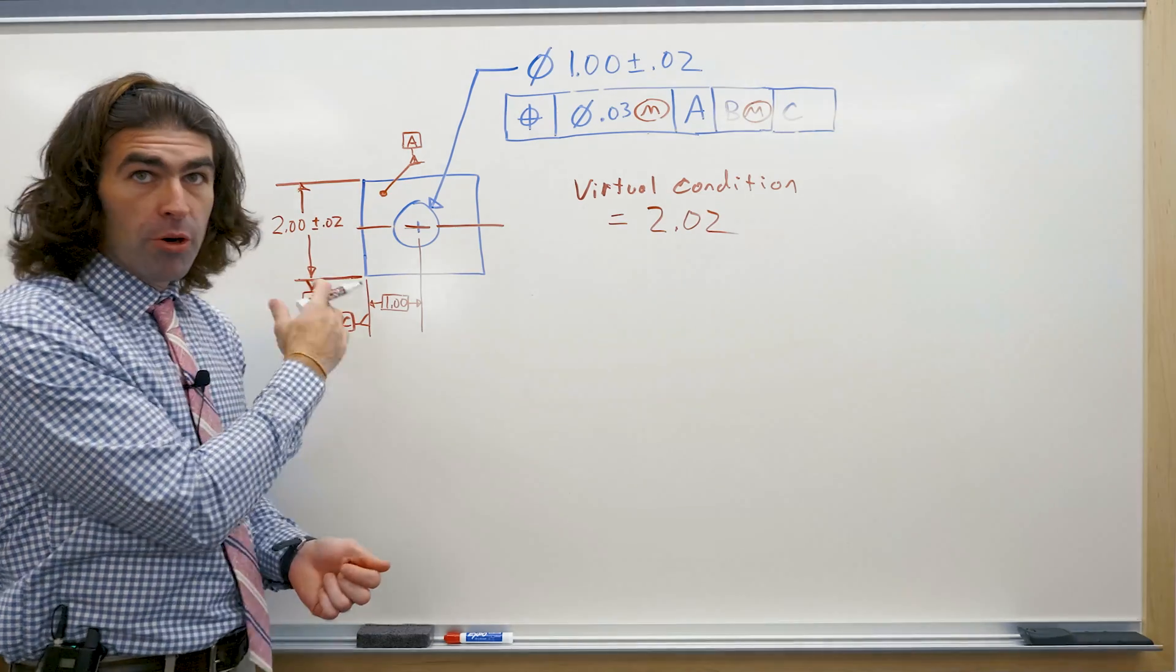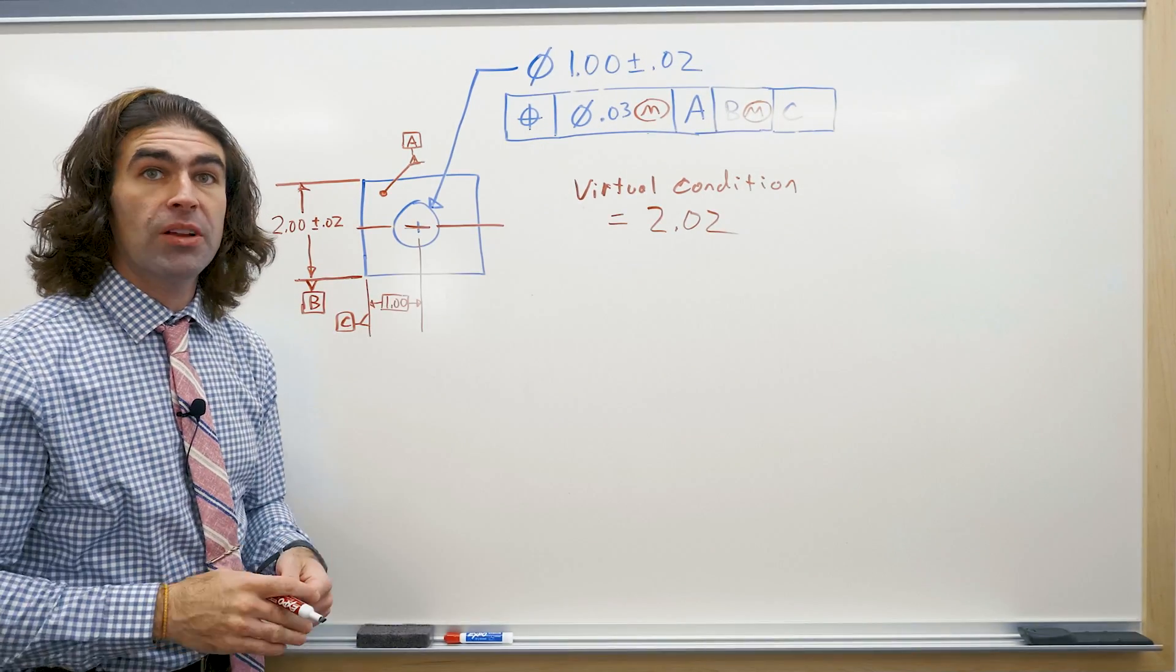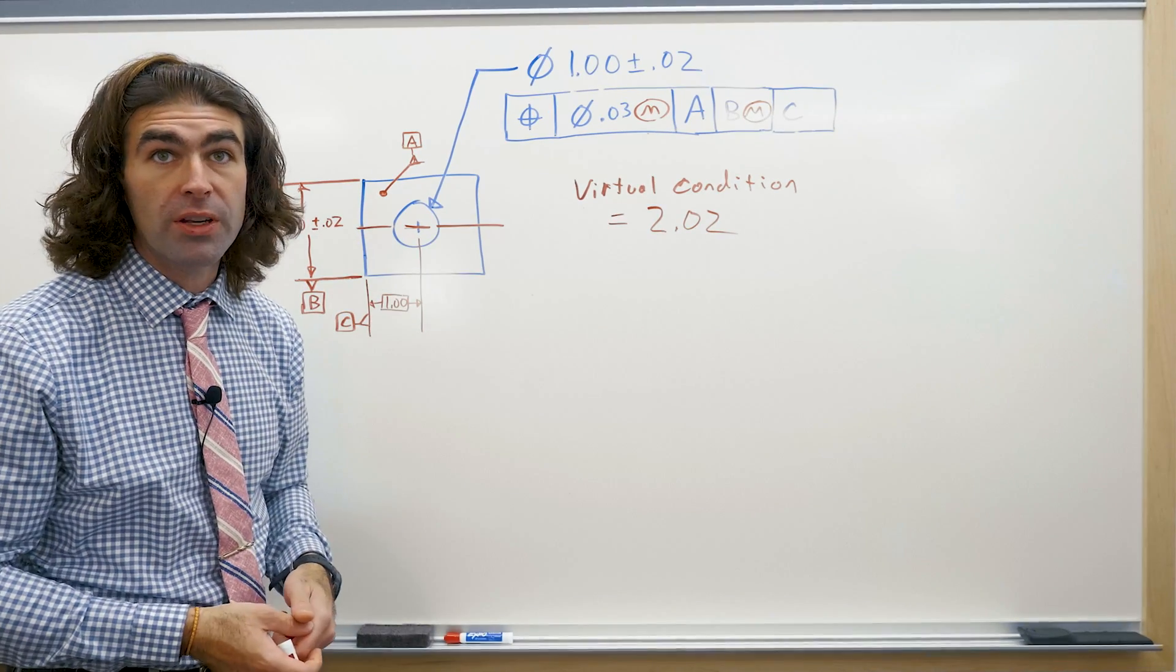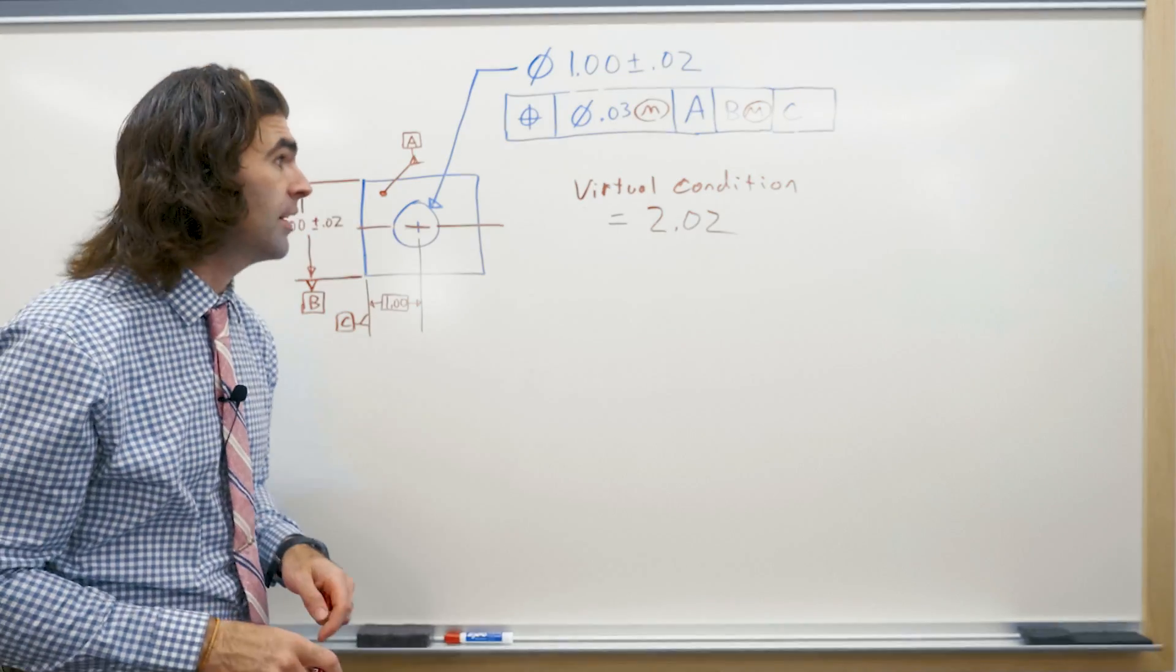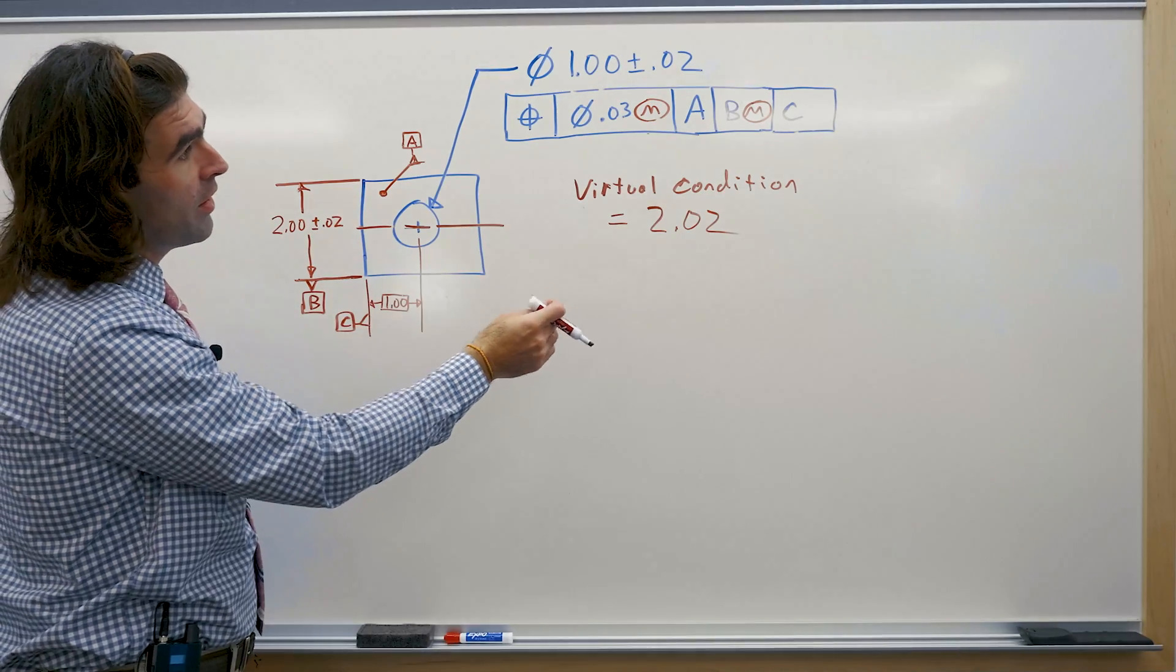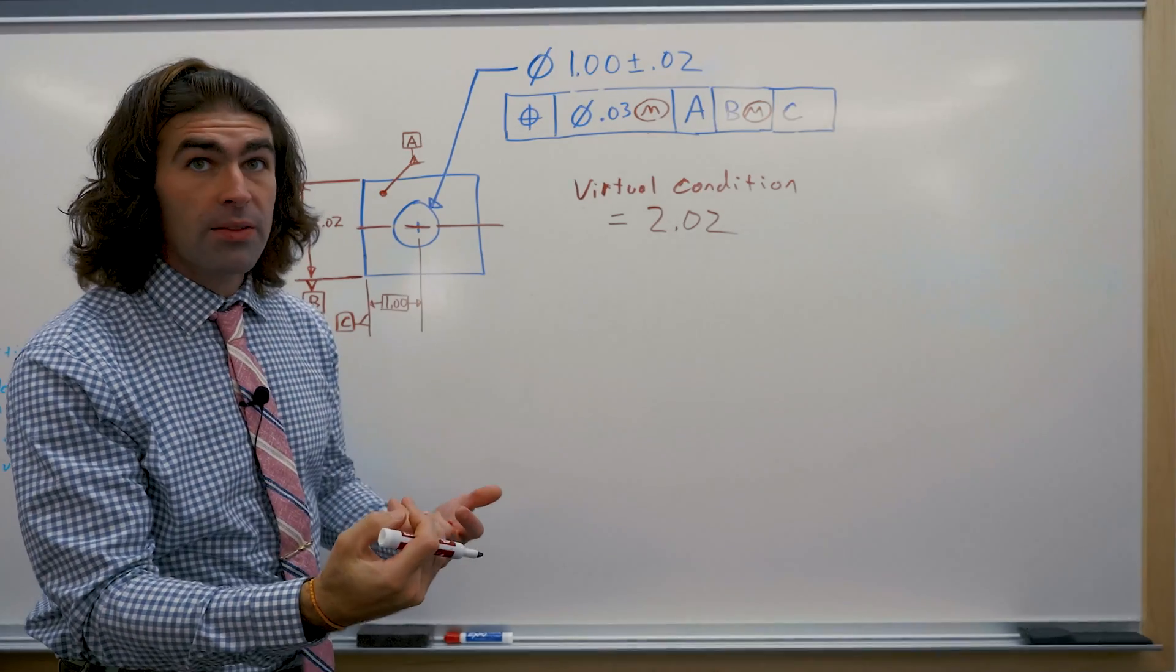If this had like a perpendicularity tolerance on it you'd add whatever that geometric tolerance is to the size and that would be your virtual condition. But in this case just got a size dimension. We're gonna stick with that. So it's saying when you inspect this part still got to put it up against A at least three points so it lays flat.